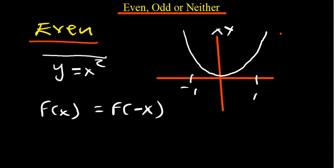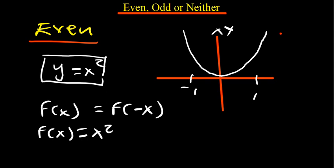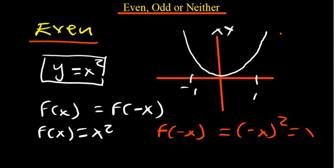For example, if asked to show whether f(x) = x² is even, you start with f(x) = x², then find f(-x) by plugging in -x where there is x. You get (-x)² = x², so nothing has changed — this confirms the function is even.